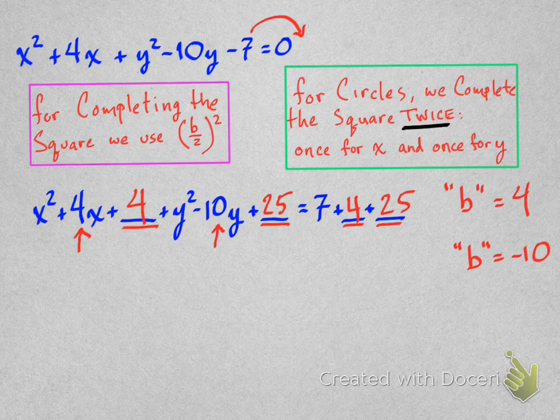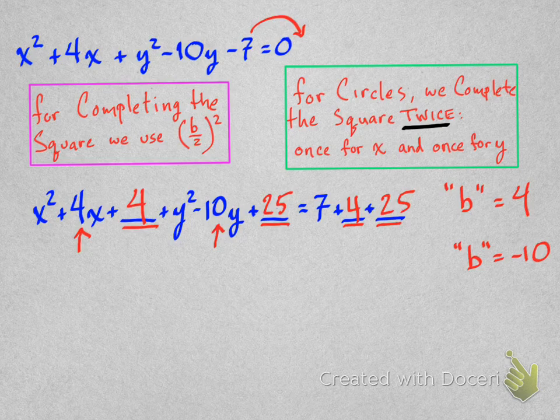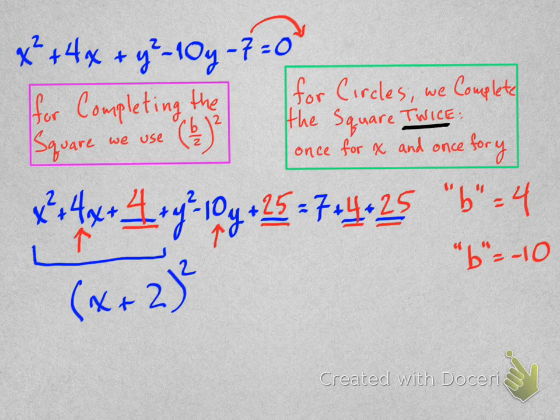And now we start doing the next step in the completing the square process, which is to factor. So we're going to factor all those x terms. That factors down to x plus 2 squared. And the y terms factor to y minus 5 squared.